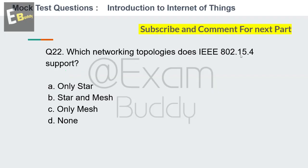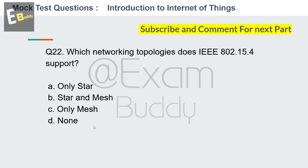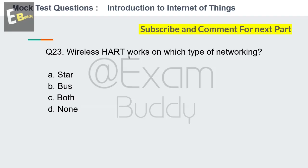Question number twenty-two: which networking topologies does IEEE 802.15.4 support? Options: only star, star and mesh, only mesh, none. The answer is B — star and mesh.